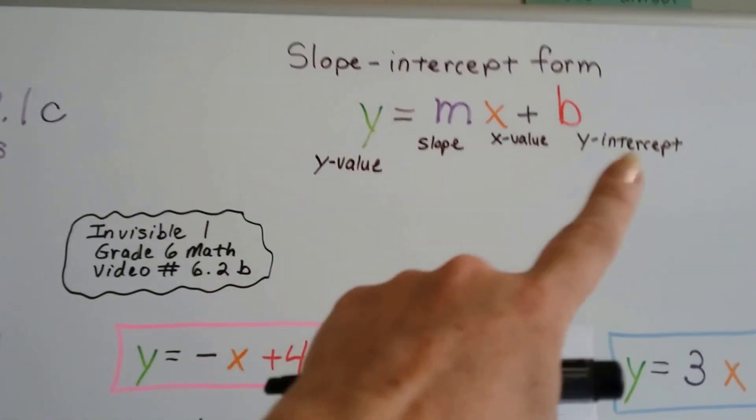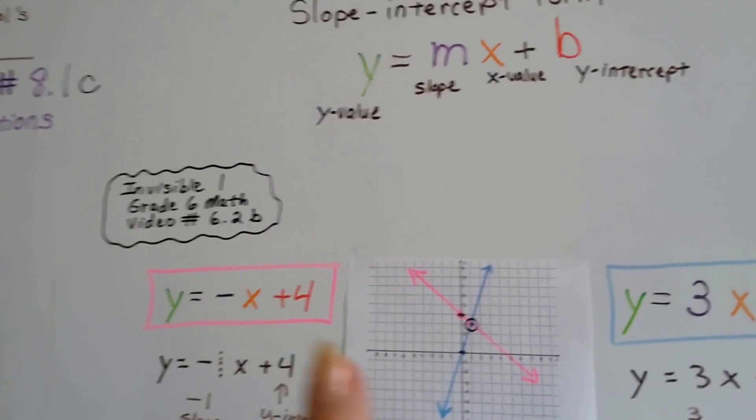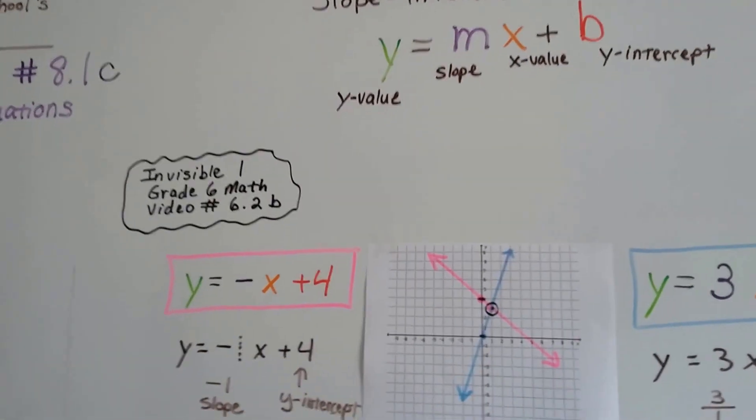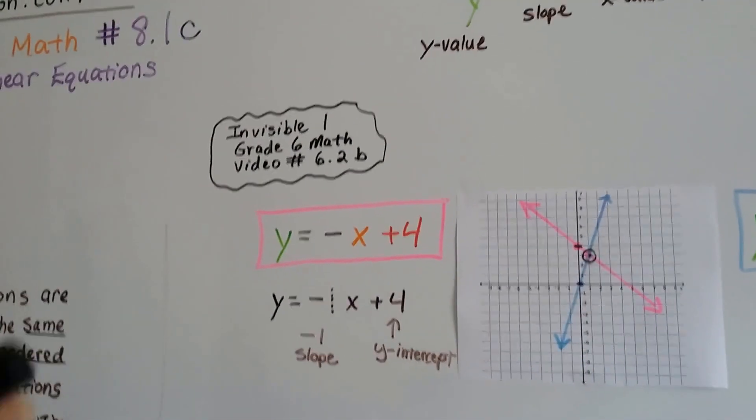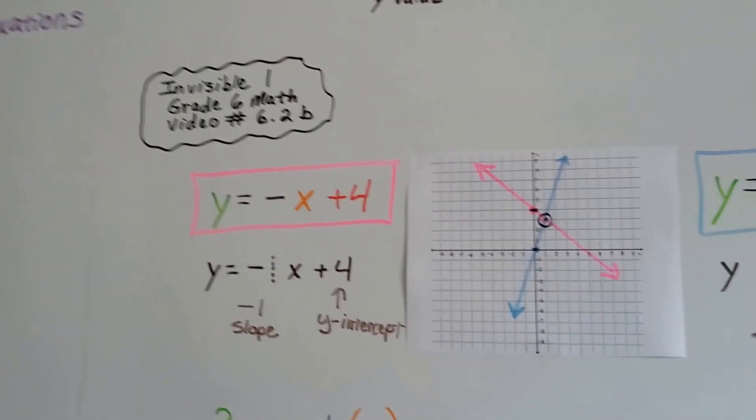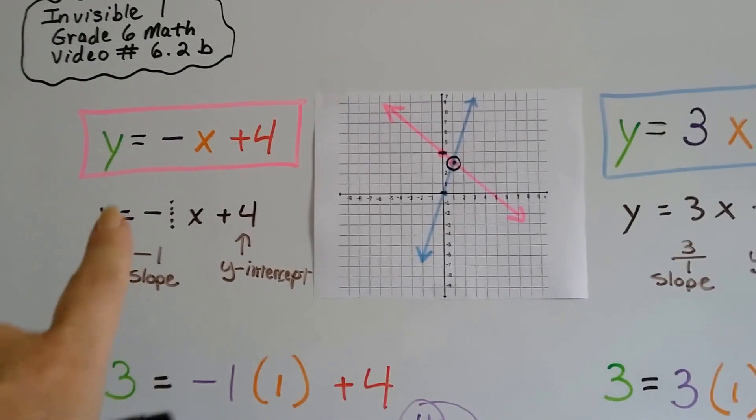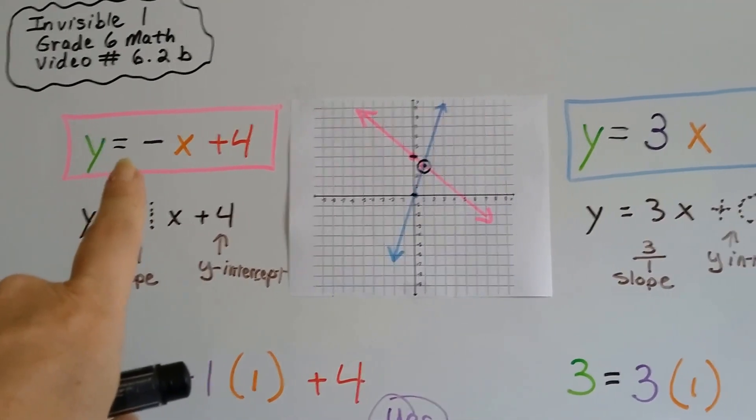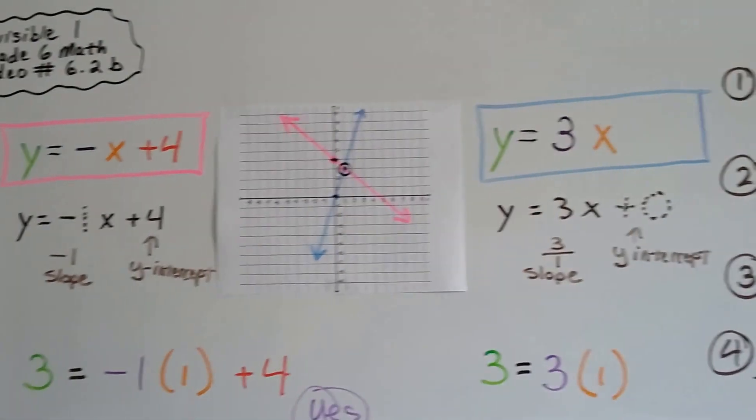Keep in mind that these are all in slope-intercept form, but we can graph things that are not in that form. We're just doing that right now because we're just getting into this in chapter 8. So we've got this as our pink line and this as our blue line.